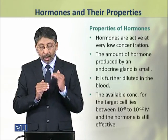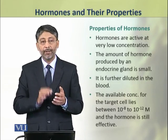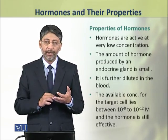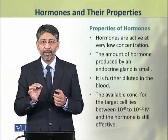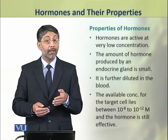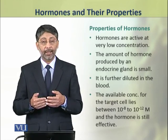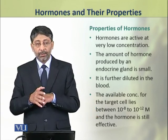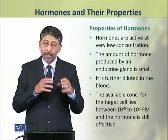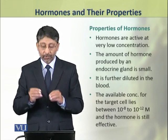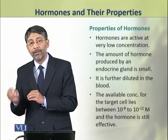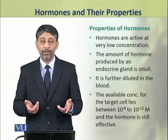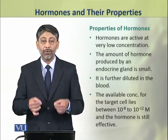Dear students, hormones are active at very low concentration. Endocrine glands produce hormones in very small quantities, and these hormones are circulated through the blood where they become highly diluted. So for tissues, the available concentration of a hormone lies between 10 raised to power minus 8 to 10 raised to power minus 12 molar. But all hormones are still active at this low concentration.